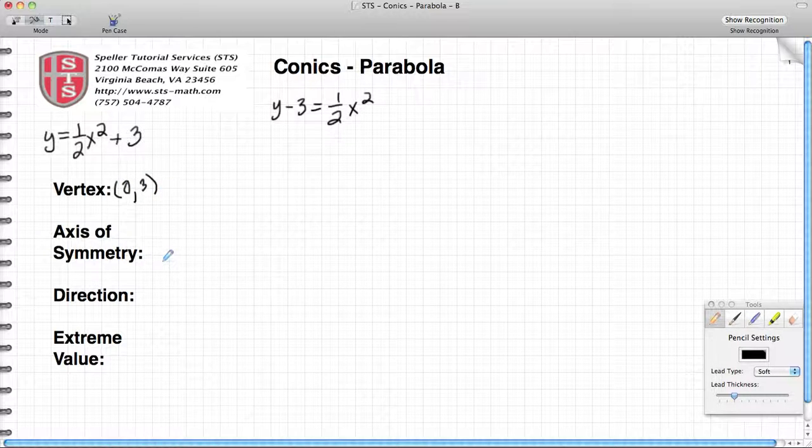Now we're going to try to find the axis of symmetry. Being that the x is the variable being squared, that means that our axis of symmetry is going to lie along the x value, and in this case where x is equal to 0.